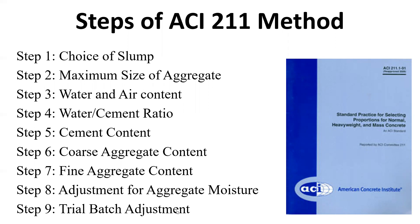There are nine steps to this process when you're going to design for normal weight concrete. Step one: choose your slump. Step two: find the maximum size of your aggregate. Step three: water and air. Step four: water-cement ratio. Step five: determine the cement content. Step six: determine the coarse aggregate content. Step seven: determine the fine aggregate content. Step eight: adjust for the moisture in your aggregate. And step nine: do your basic trial batching.